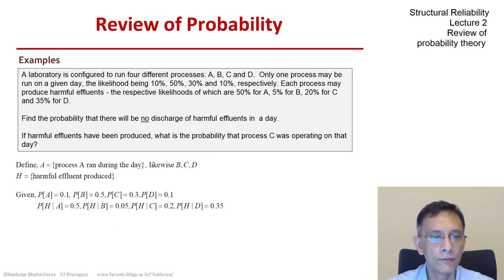The next four are conditional events so H given A, H given B, H given C and H given D and those probabilities are also stated.